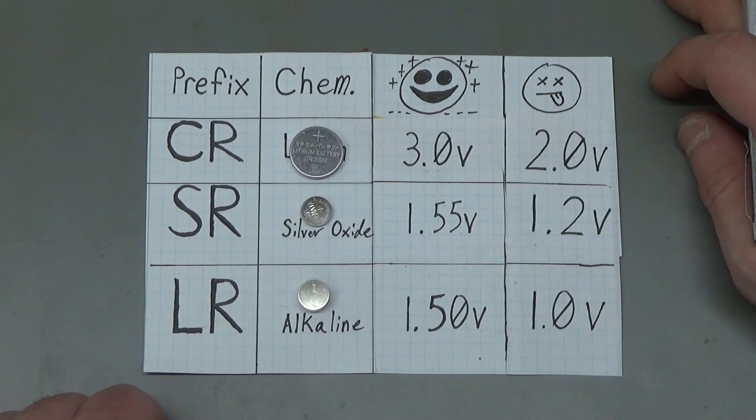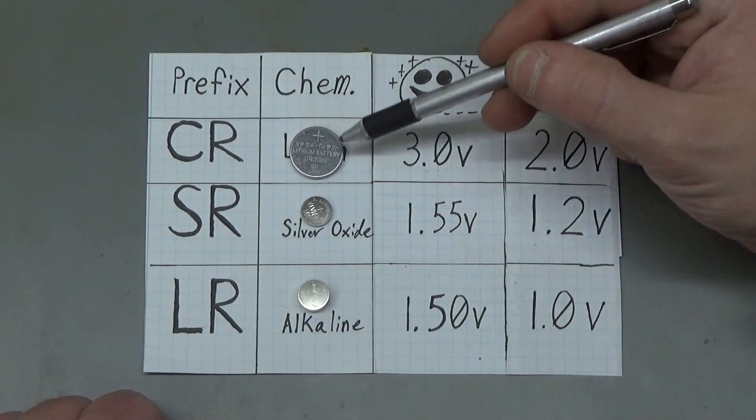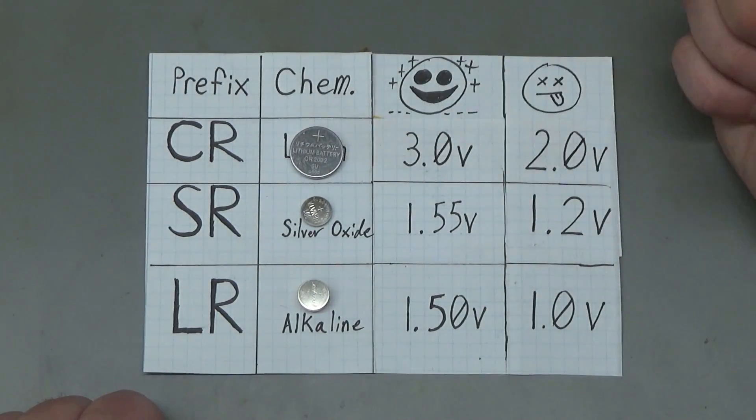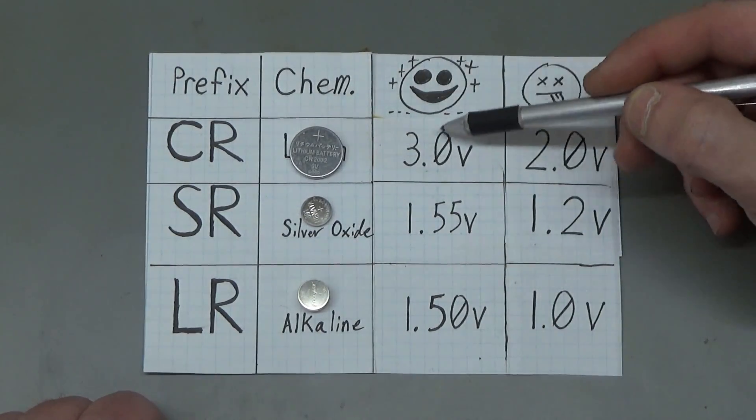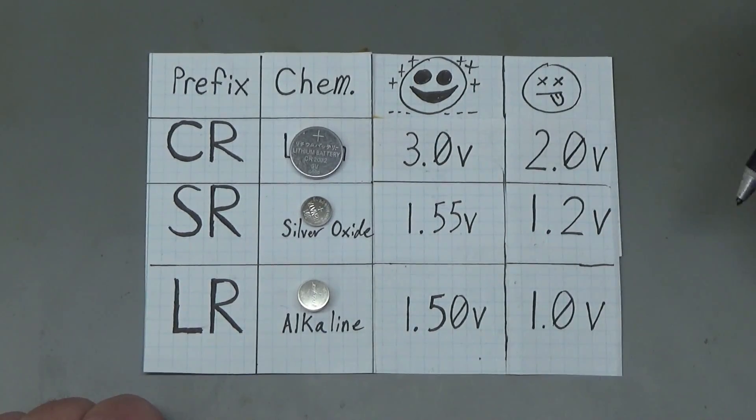And for those of you who are curious about batteries at all, there are three different types of coin cell. First, we have the CR classification—that is going to be a lithium battery. It has a nominal voltage of 3.0 volts, so that's a good, happy battery. And when it reaches around 2 volts, that's going to be when it's dead and you're going to want to replace it with a fresh battery.